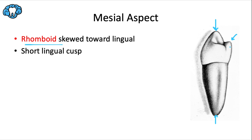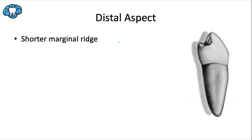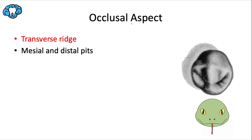From the distal aspect, we see the flatter root flute, the flatter cervical line, and the shorter marginal ridge — all the usual features discussed from the distal aspect. I also want to point out that the facial cusp curves back a great deal, similar to the shark arc we saw in the mandibular canine, which isn't surprising since these two teeth are right next to each other.